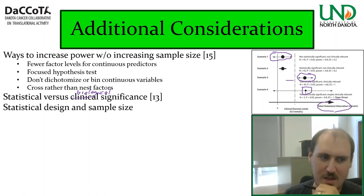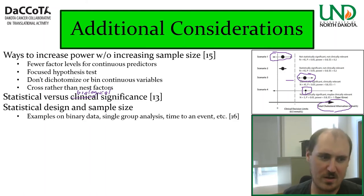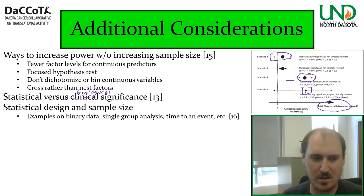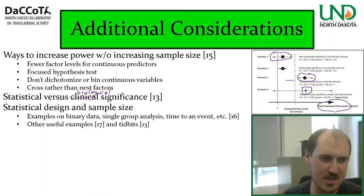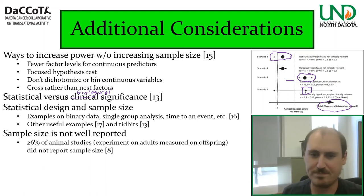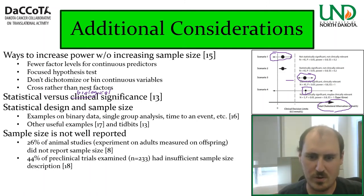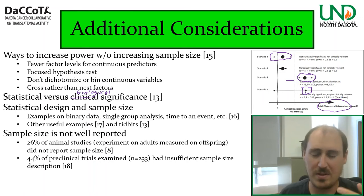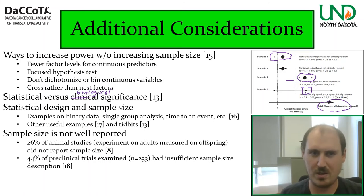A brief note on statistical design and sample size. There are more discussions to be had on specific designs — binary data, single group analysis, time to event, and so forth. One of the reasons for this talk is that sample size is not well reported. In certain animal studies, 20% did not report sample size, and 44% of preclinical trials out of 233 had insufficient sample size descriptions. So be clear about what you did and why — that's a good touchpoint for repeatable and reliable studies.